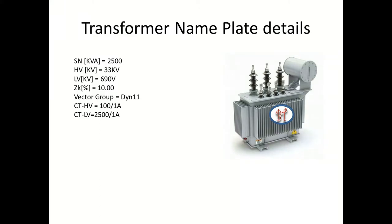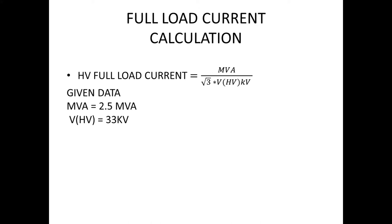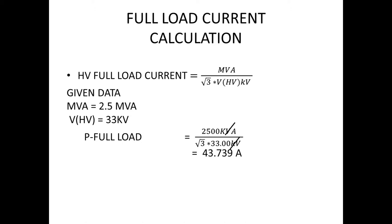The first number in the data is full load current, calculated using the formula: MVA divided by root 3 into voltage. For the HV side, voltage is 33 KV and MVA is 2.5. The formula gives 43.8 A, so full load current on the HV side is 43.8 A.